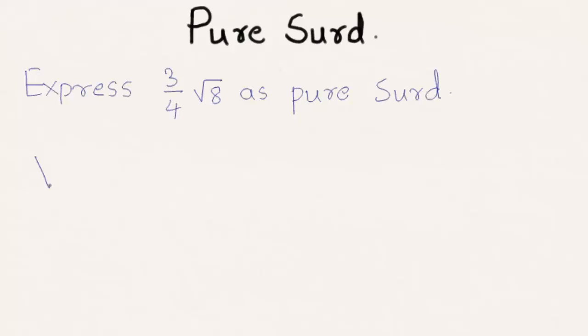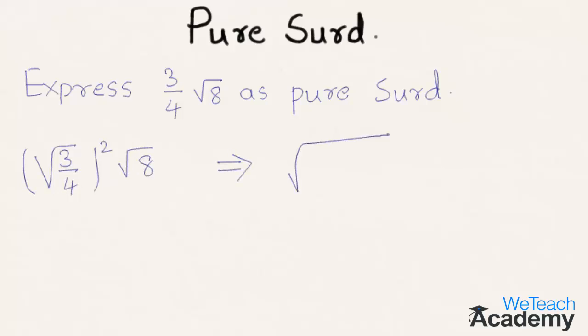So here 3 by 4 can be written as square root of 3 by 4 whole square into root 8. That is nothing but under root 3 by 4 whole square into 8.